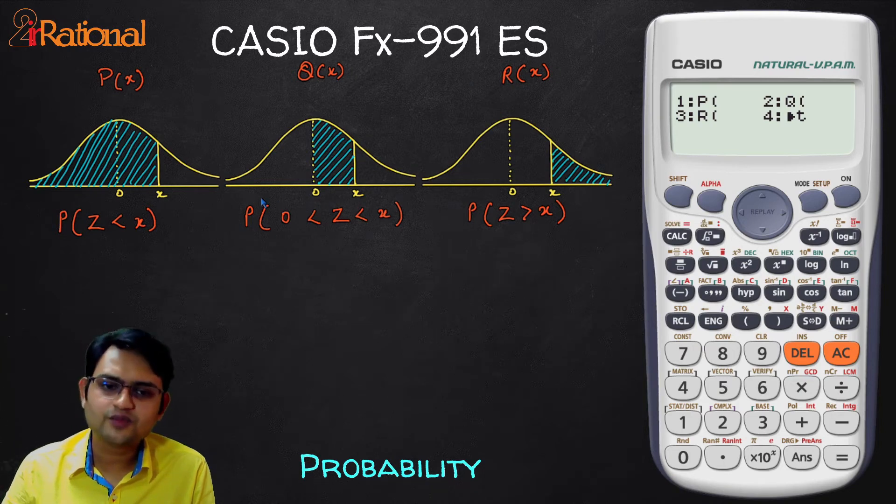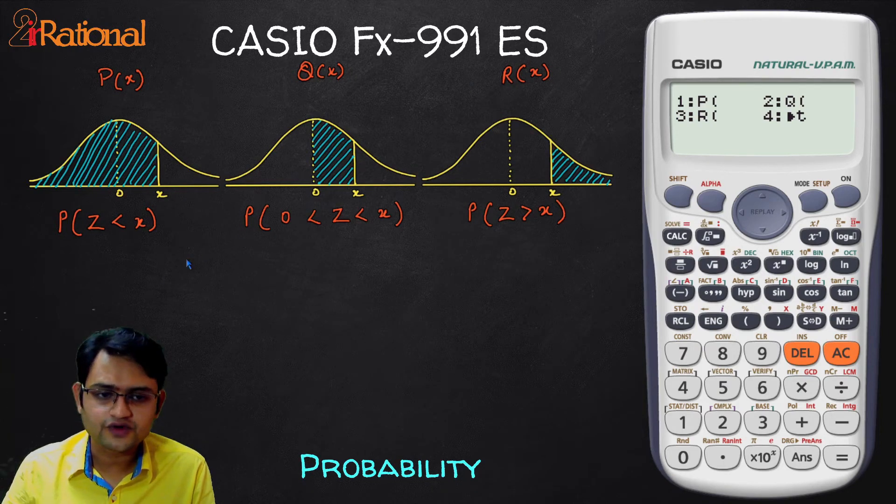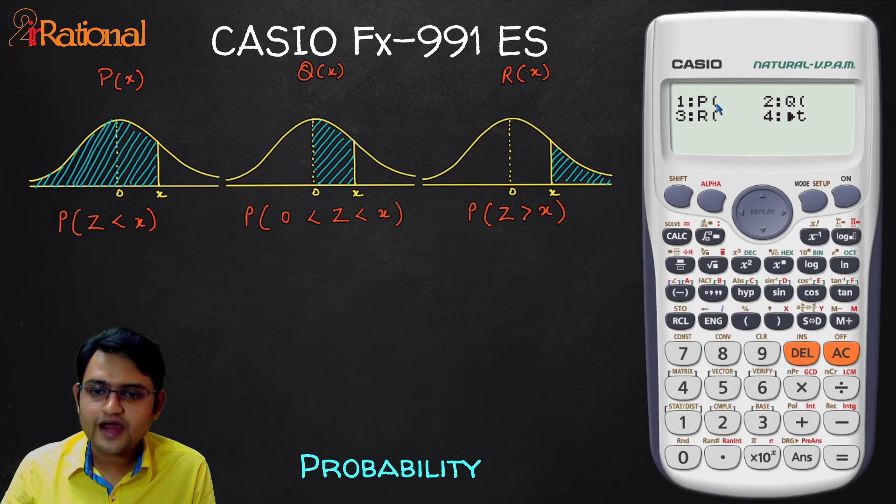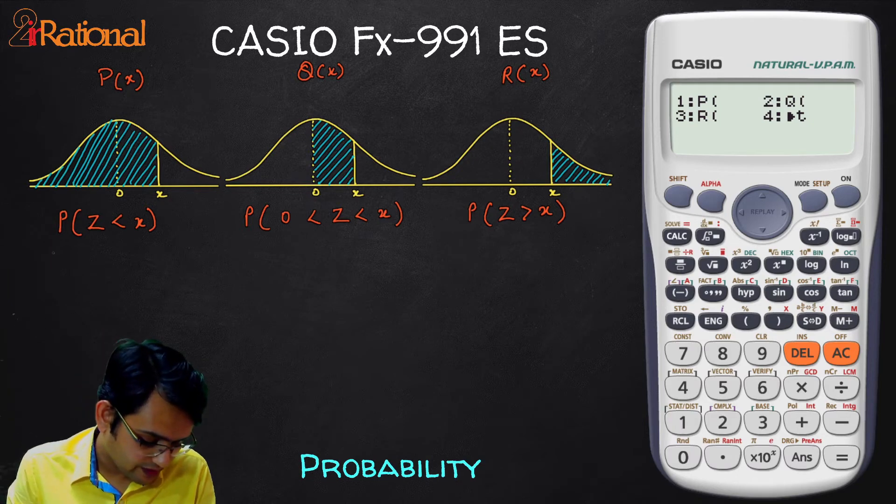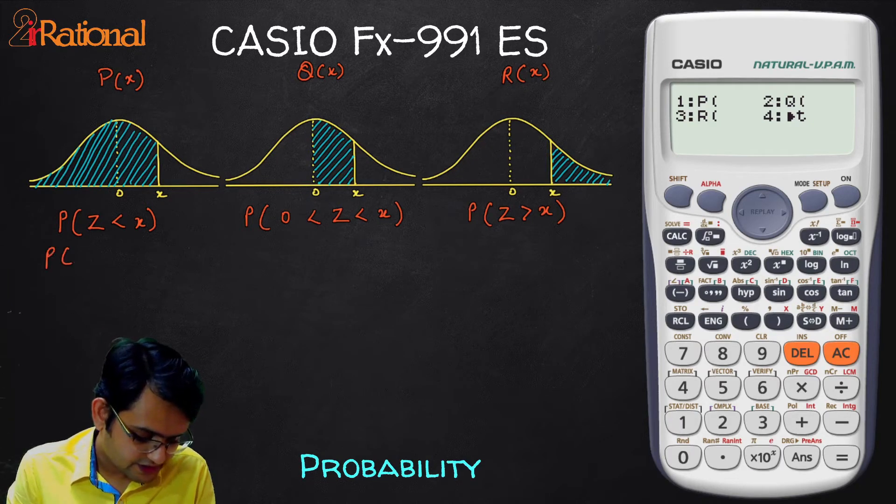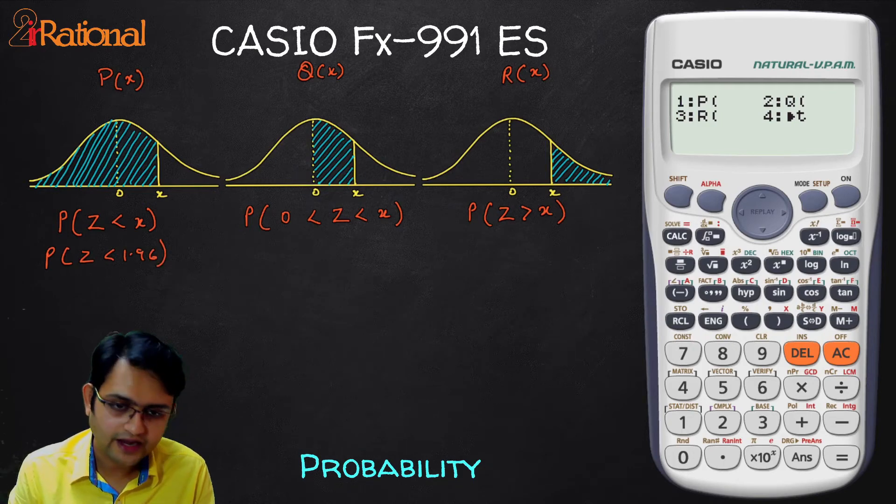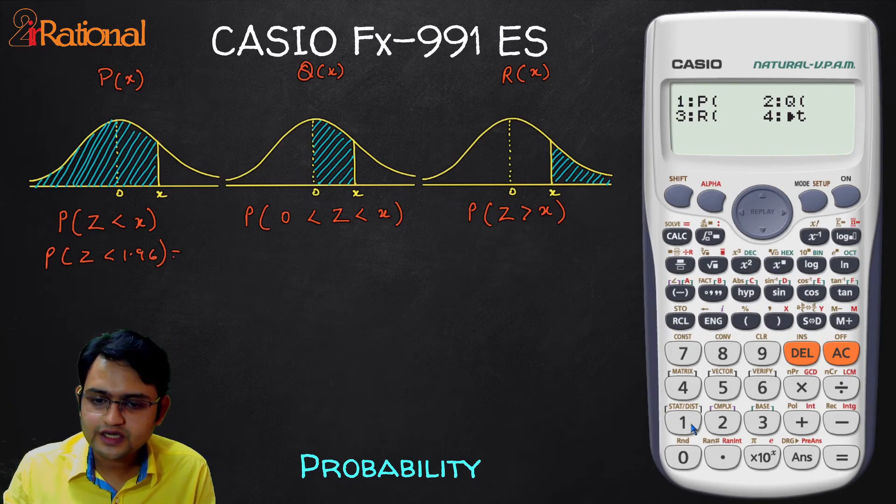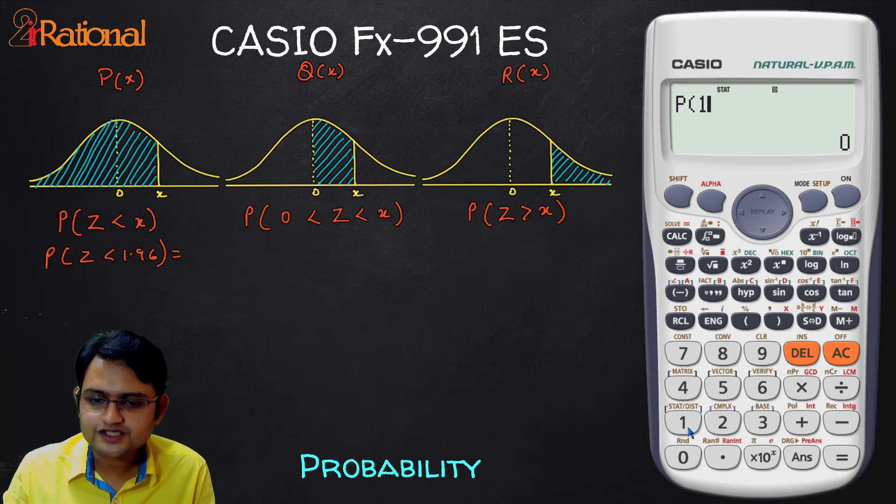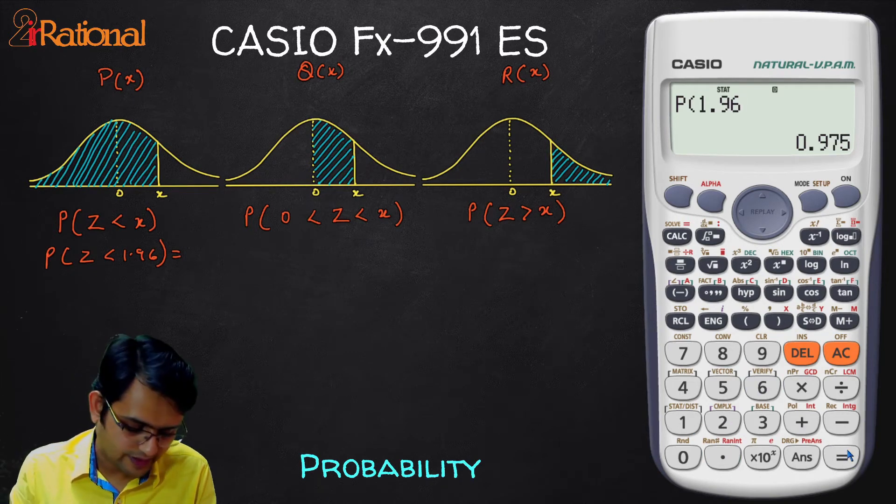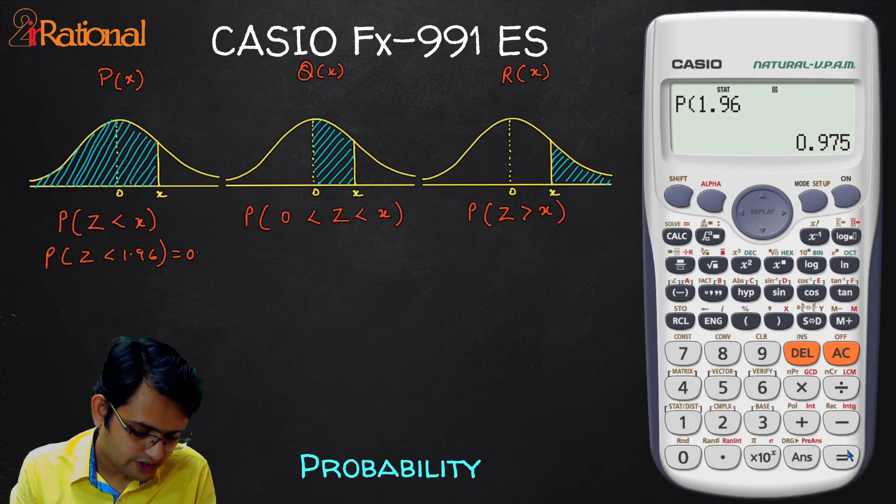Here your X can be positive, negative, anything works. So, if I find probability, let's say I'll use P first. Here let's say we are trying to find probability that our Z is less than 1.96. For that, we'll use P. I'll press 1 and I will just write 1.96 and equal to and I get probability as 0.975.